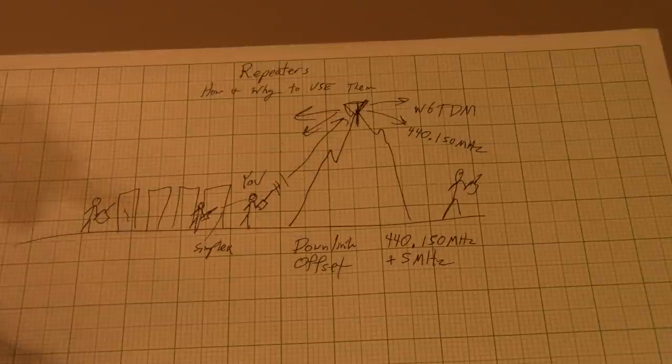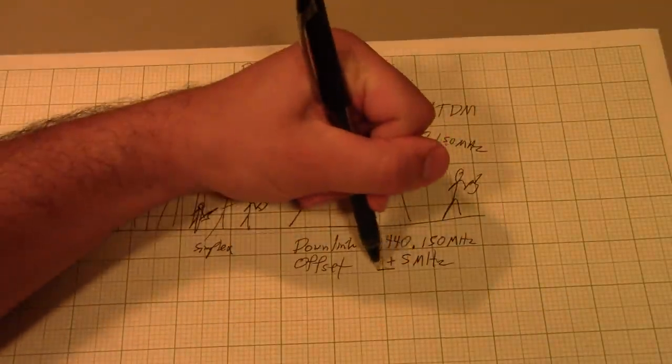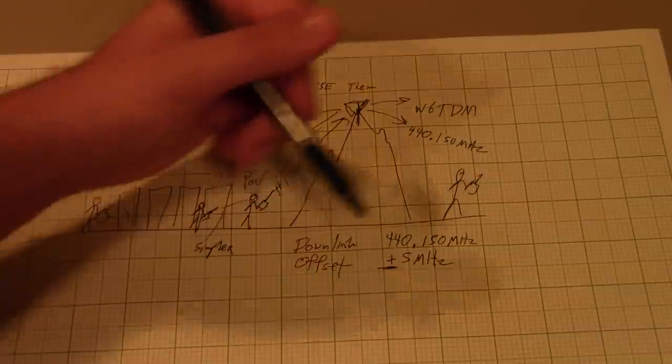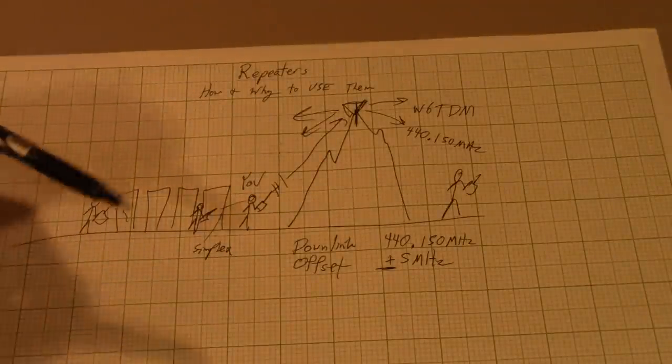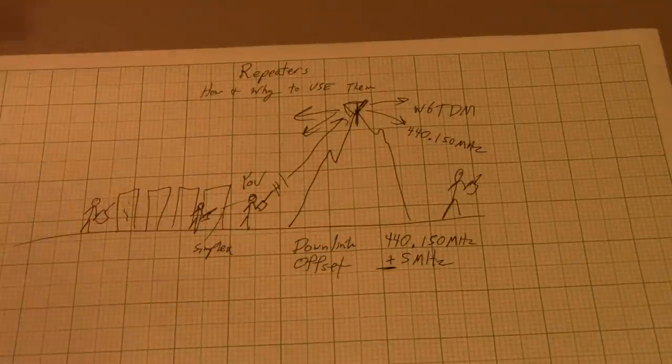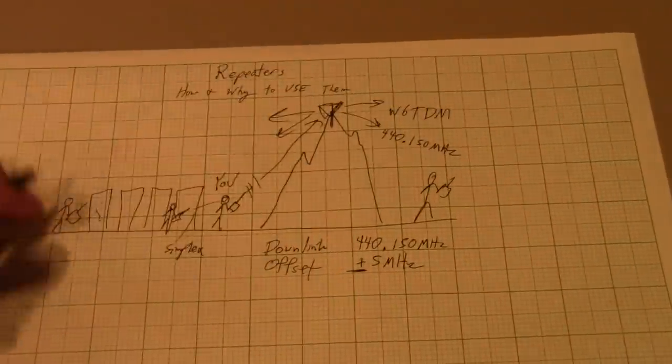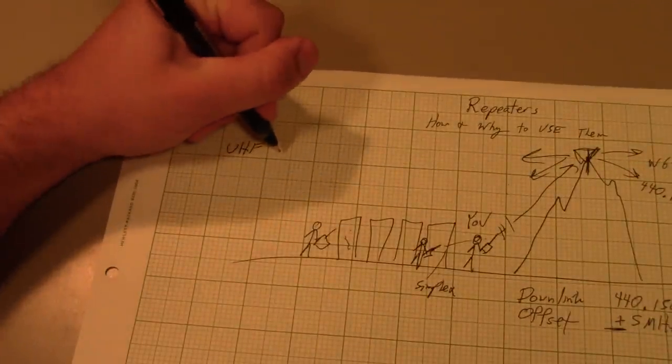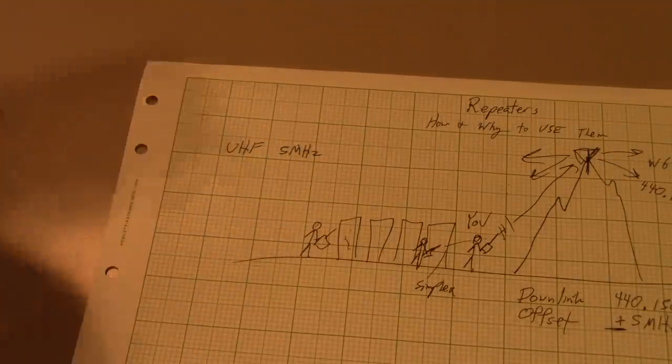You'll notice that hams in particular will often not tell you that it's plus 5 MHz. They will just tell you it is a positive offset, as opposed to a negative offset, which is the other option. This is because on the UHF band, this is the 440 MHz amateur band, the offset tends to almost always be 5 MHz. So on UHF, the offset tends to be 5 MHz, either up or down.